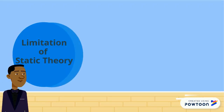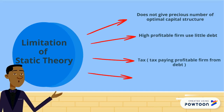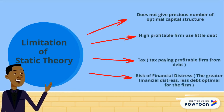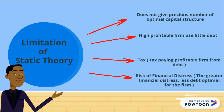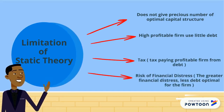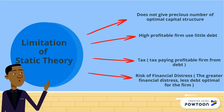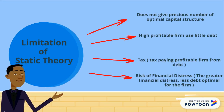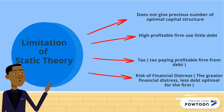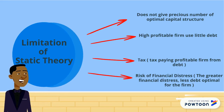Limitations of the static theory: it does not give a precise number for the optimal capital structure. Highly profitable firms use less debt. Tax-paying profitable firms benefit from debt but face risk of financial distress. The greater the financial distress risk, the less debt is optimal for the firm.